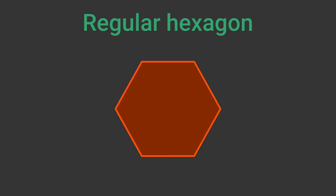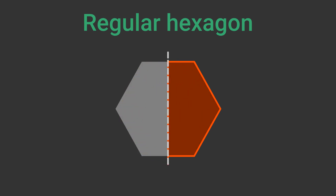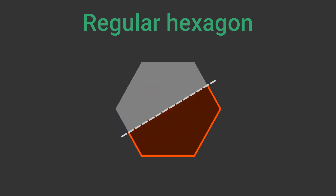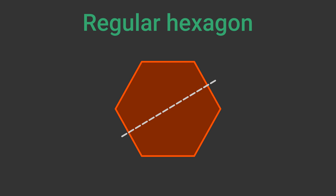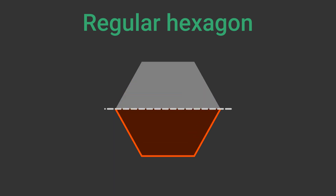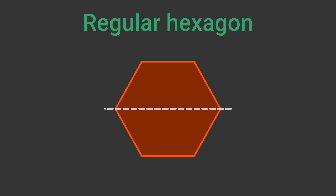A regular hexagon has a line of symmetry between the middle of any side and the middle of the opposite side. The same is true whichever side we choose. Since there are three pairs of sides, this creates three lines of symmetry. A regular hexagon also has a line of symmetry between any vertex and the opposite vertex. Since there are three pairs of vertices, this creates three more lines of symmetry. So a regular hexagon has six lines of symmetry in total.